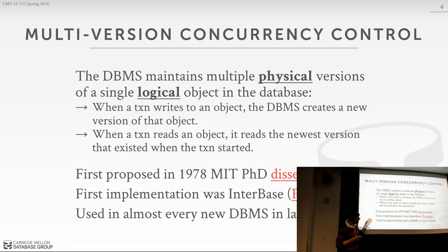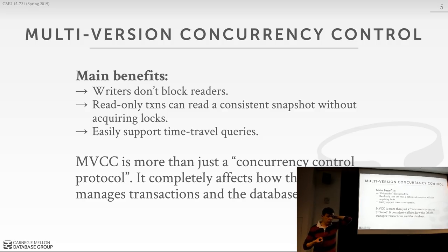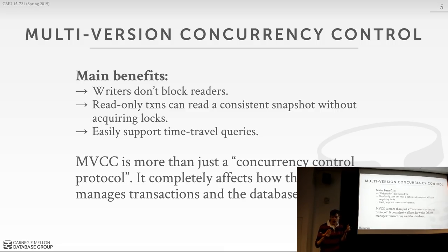MVCC is used in pretty much every database system built in the last 10 years, so this is the way people build modern systems and we should understand it carefully. The biggest benefit is that writers don't block readers, and readers in some cases don't block writers. In two-phase locking on a single-version system, if you want to write to an object you take the exclusive lock, and nobody else can get a share lock and read it. But if you don't need to see the latest version — if your transaction is running in the past in logical time — you can read the older version without interfering.